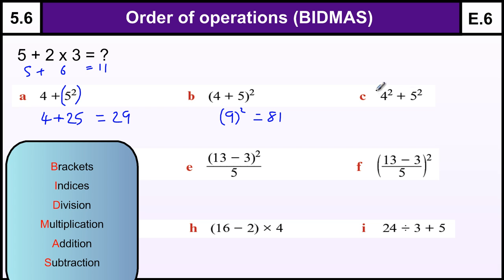Here we've got squaring and a plus, so we do the squaring first. 4 squared is 16, 5 squared is 25, and then I'm going to add them together to get 41.